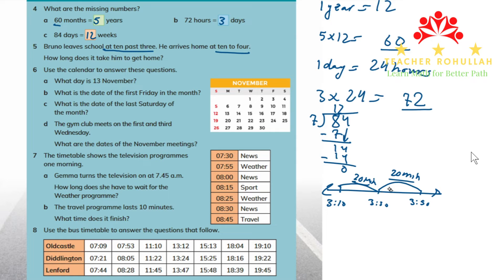The answer is 40 minutes. From 3:10 (10 past three) to 3:50 (10 to four), it takes Bruno 40 minutes to get home.